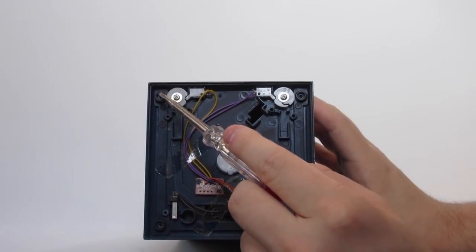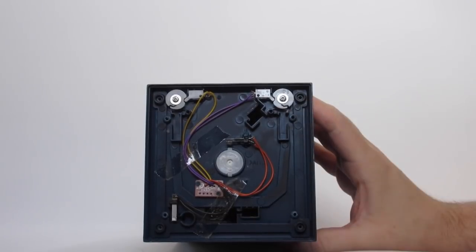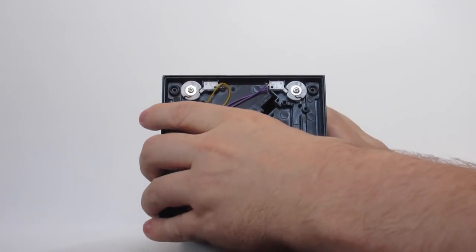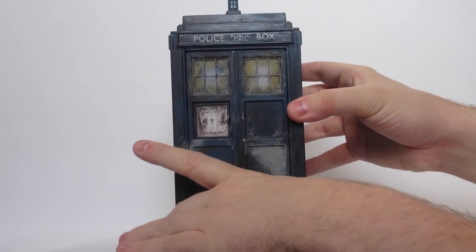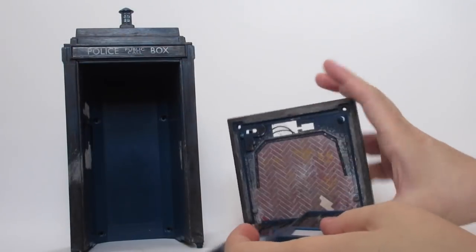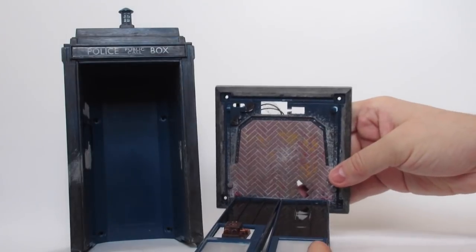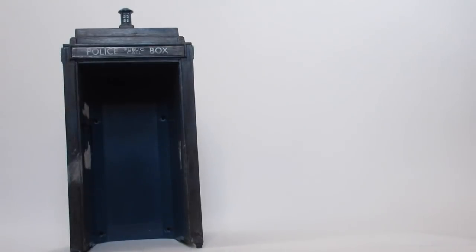That will remove, if I'm very careful, that will then allow you to remove the rest of the TARDIS from the base. Obviously then you've literally just got the doors as they are, still on the part of the base. I'm going to put that to one side now.